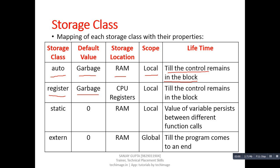The second one is register storage class. Its default value is also garbage, its storage location is CPU registers, scope is local to the block in which it is declared, and lifetime is similar to the automatic storage class.